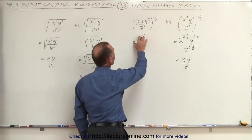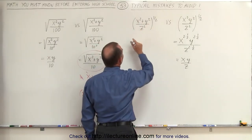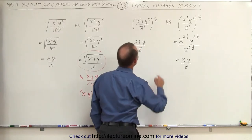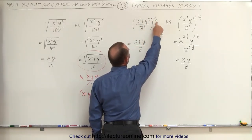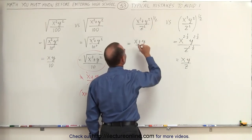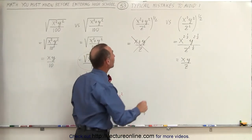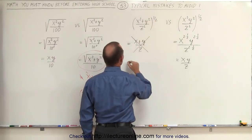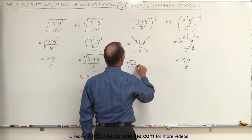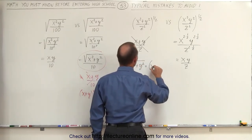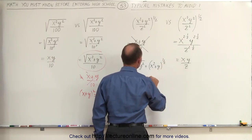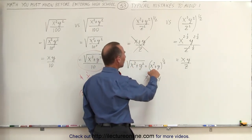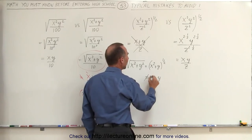Now you may be tempted to do the same over here with x squared plus y squared divided by z squared, and think this equals x plus y divided by z — by multiplying each exponent times one-half. But it is not correct. The reason is because there's a plus sign there, and therefore you cannot apply the one-half to the 2 on x squared and separately to the 2 on y squared. The square root of x squared plus y squared, which equals the quantity x squared plus y squared to the one-half power, is not equal to x plus y.